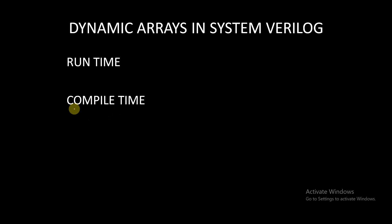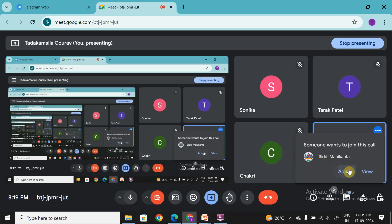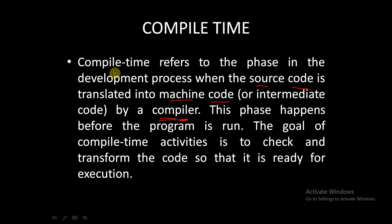We will start with the discussion of dynamic arrays in SystemVerilog, but before that we need to know two concepts: runtime and compile time. Compile time refers to the phase in the development process where the source code is translated into machine code or intermediate code by a compiler. Basically, the compiler converts the source code — the code which you have written — into machine code or intermediate code, and this is done during the compile time.